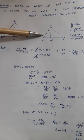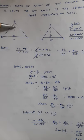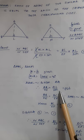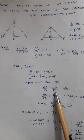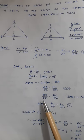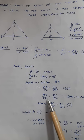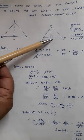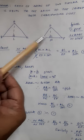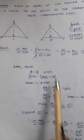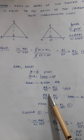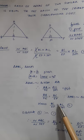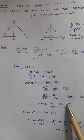AB upon DE is equal to AL upon DM, because if two triangles are similar, their sides are in proportion. Also, since the bigger triangles ABC and DEF are similar, AB by DE is equal to BC by EF. Comparing these two results, AB by DE is common, so AL by DM and BC by EF are equal.